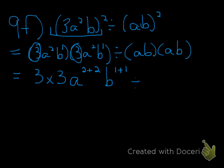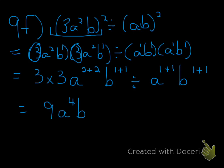I rewrite the division sign. a times a is a to the power of 1 times a to the power of 1, which means you keep the same base and add your exponents. For your b's, you do the exact same thing — keep the same base and add the exponents. I'm going to simplify: 3 times 3 is 9, a to the power of 4, b to the power of 2, divided by a to the power of 2, b to the power of 2.